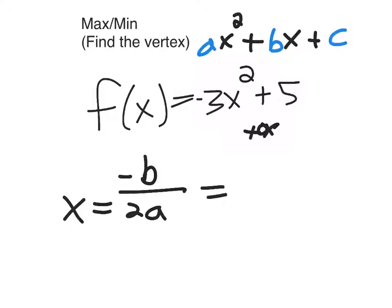So for this function, I'm going to do negative 0, which is just 0, divided by 2 times a, which is negative 3 in my case. The vertex occurs at x equals 0.